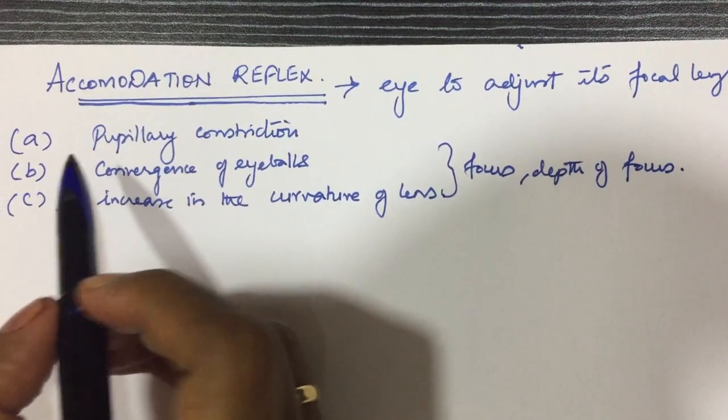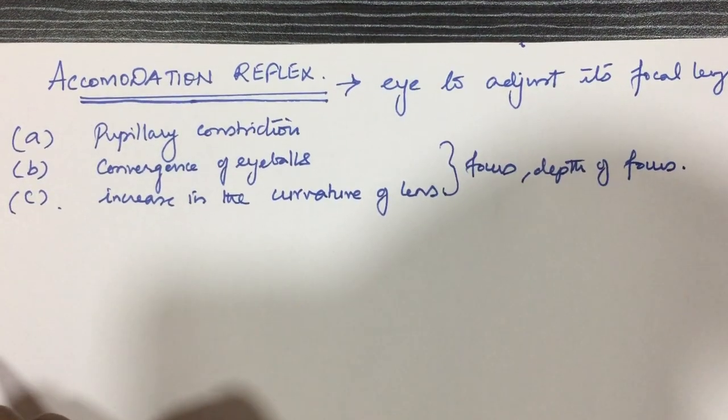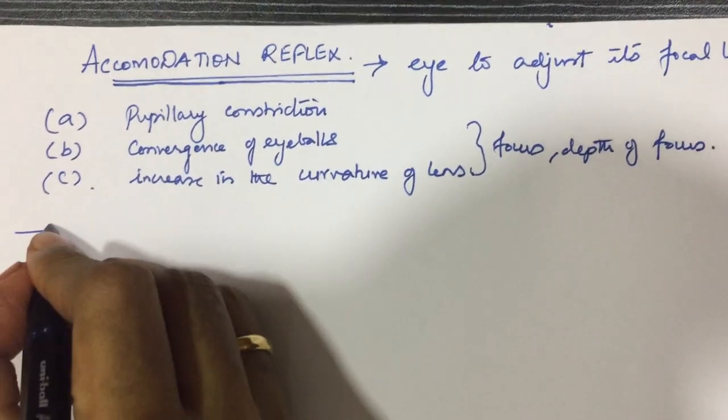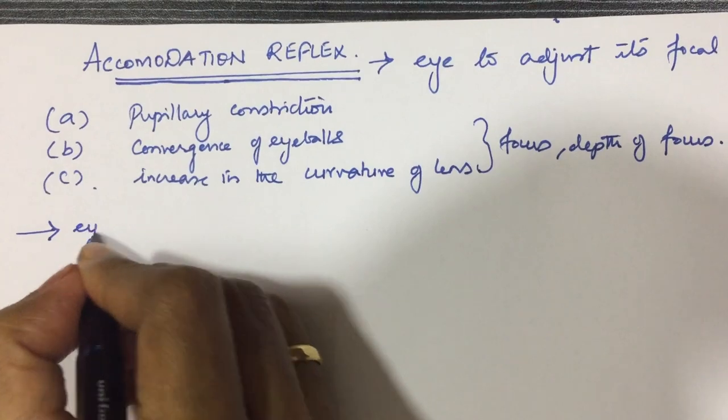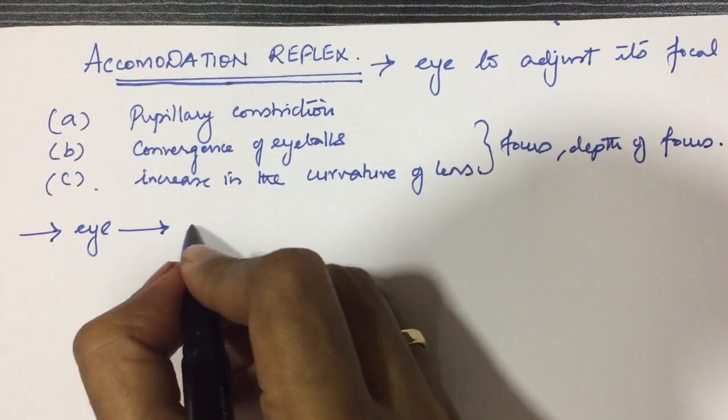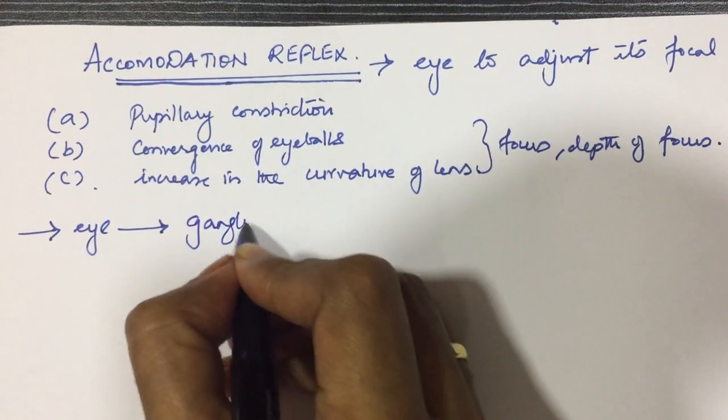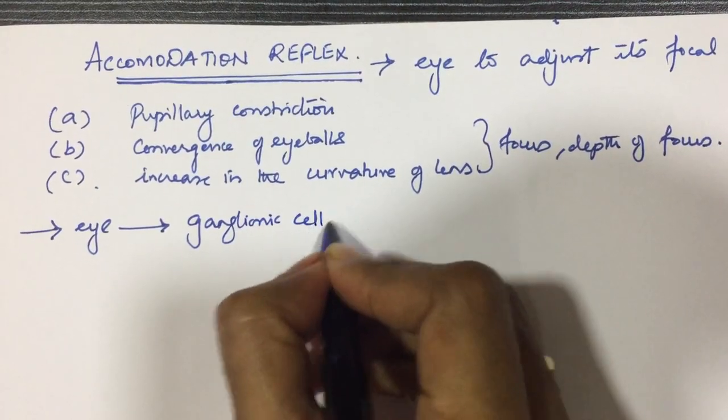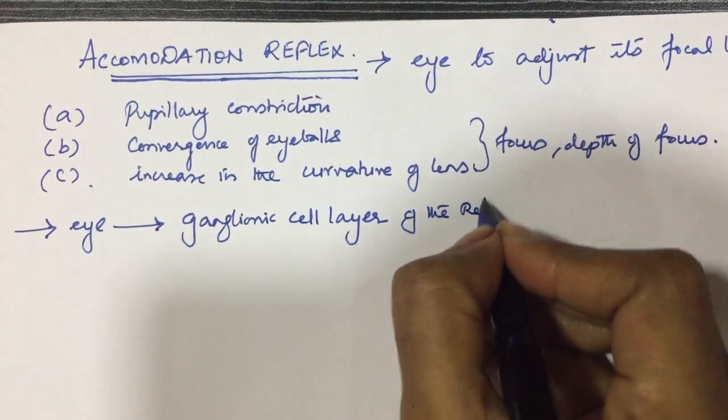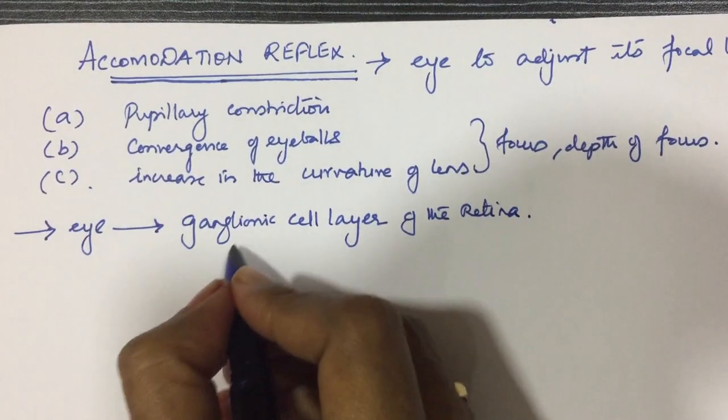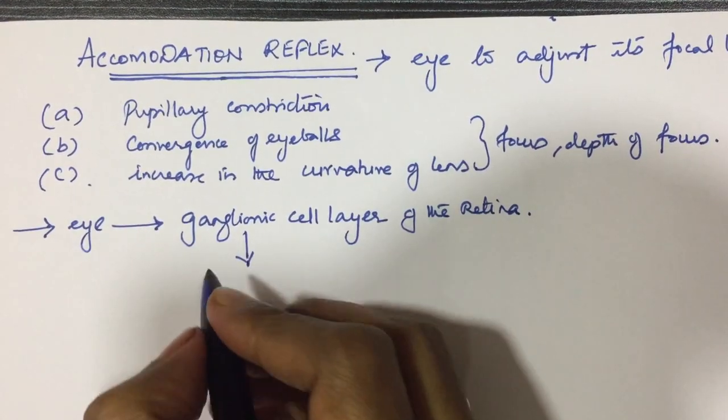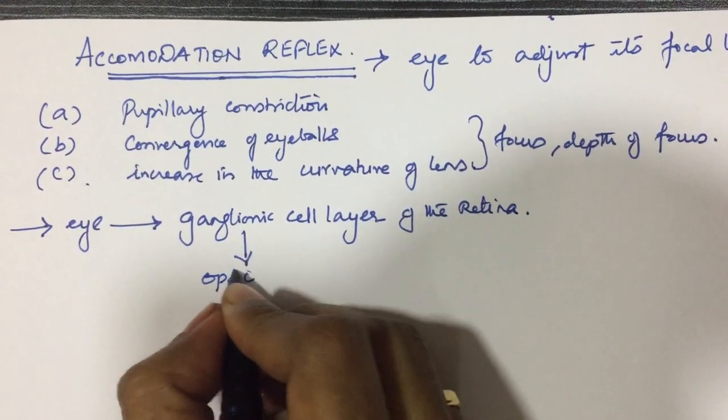How are all these three things achieved in accommodation? When light is shown on the eye, the impulses are carried via the ganglionic cell layer of the retina. From here the axons of these cell layers pass through the optic nerve.